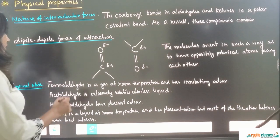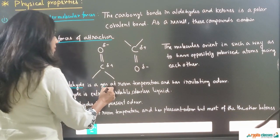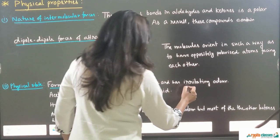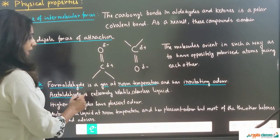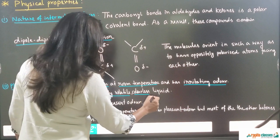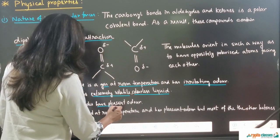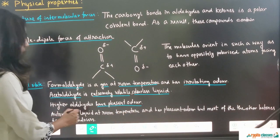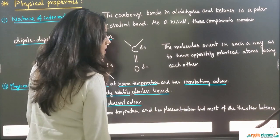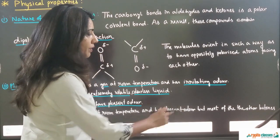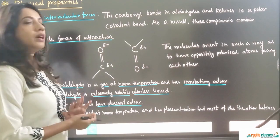Next physical property is physical state. Formaldehyde is a gas at room temperature and has an irritating odor. Acetaldehyde, the second member of the aldehyde group, is an extremely volatile, colorless liquid. Other higher aldehydes have a pleasant odor. Acetone, the first member of the ketone series, is a liquid at room temperature with a pleasant odor. But most other ketones have a bad odor. These are the key physical states of aldehydes and ketones to remember.